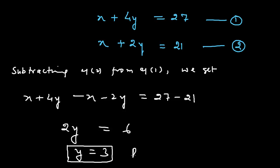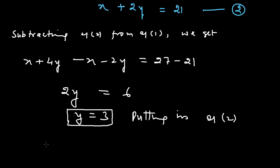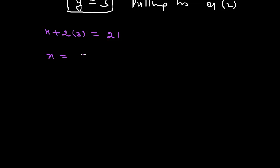We shall put this value in equation number two. Then X plus 2 into 3 will be equals to 21. This means X will be equals to 21 minus 6, which means X equals 15.